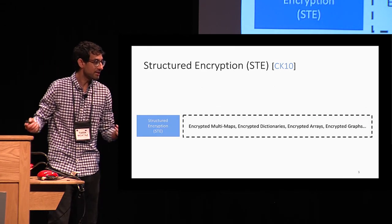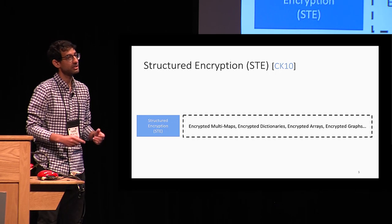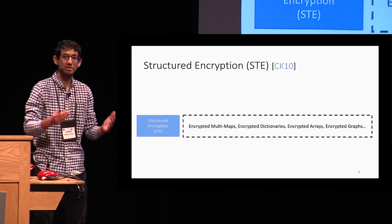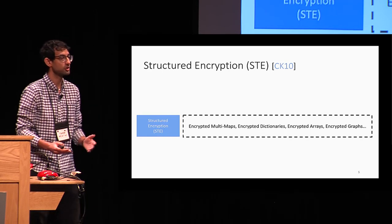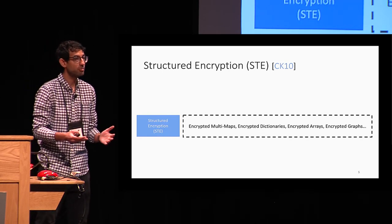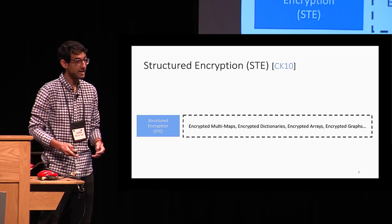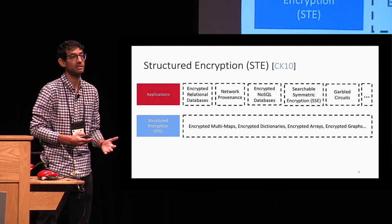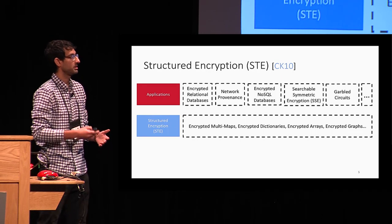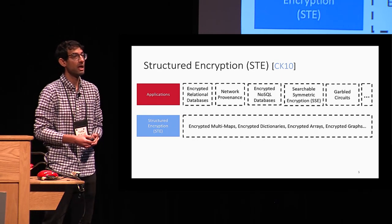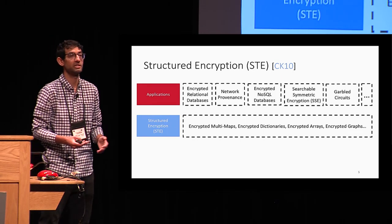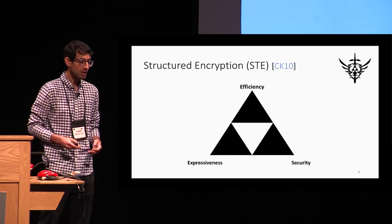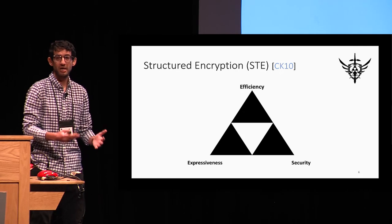Examples of structured encryption include encrypted multi-maps, encrypted dictionaries, encrypted graphs, encrypted arrays, and so on. These are building blocks that one can use to design higher-level applications such as encrypted relational databases, encrypted non-SQL databases, symmetric searchable encryption, garbled circuits, privacy-preserving network provenance, and so on.